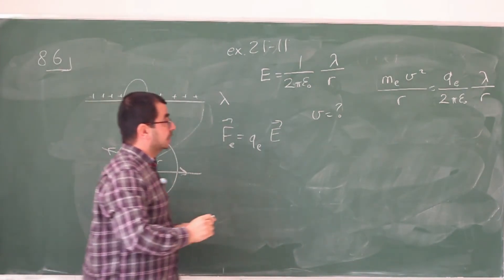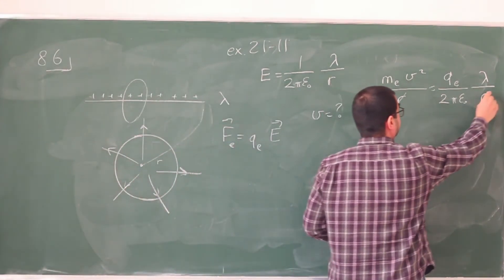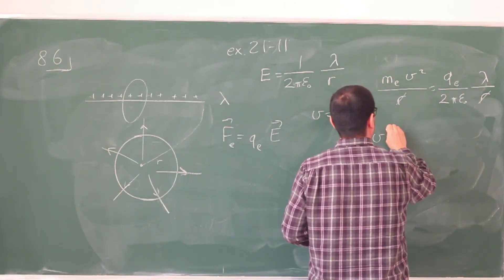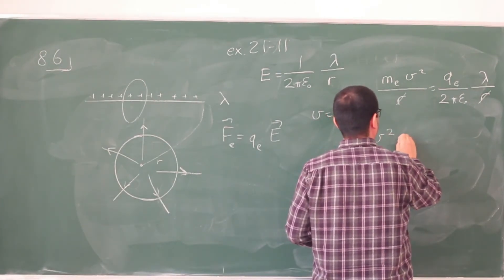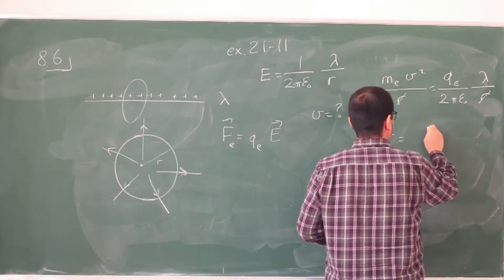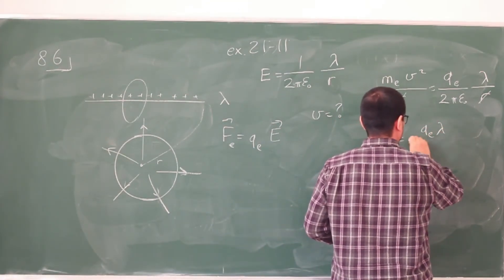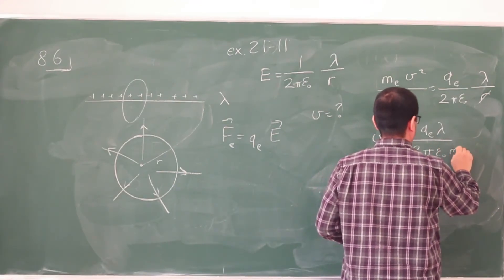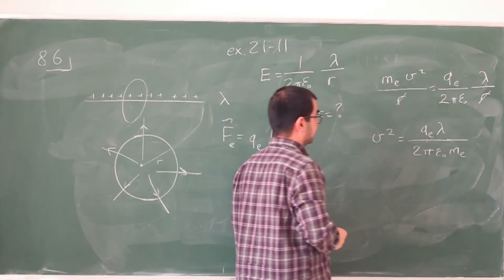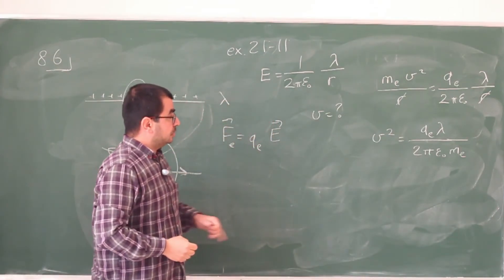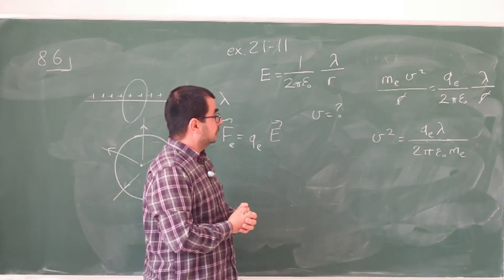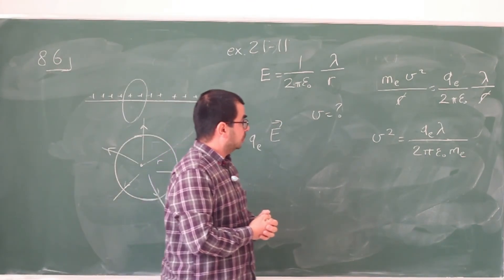is 1 over 2 pi epsilon 0 lambda over r. And here you see that the r is cancelled. And you can find that V square is going to be QE lambda divided by 2 pi epsilon 0 Me. And these you can look up.